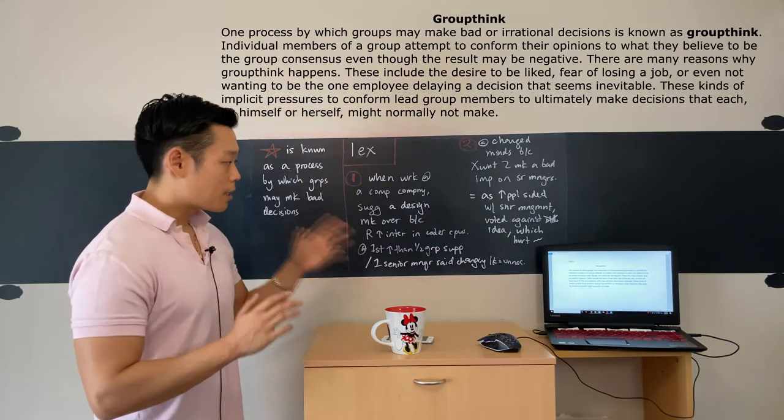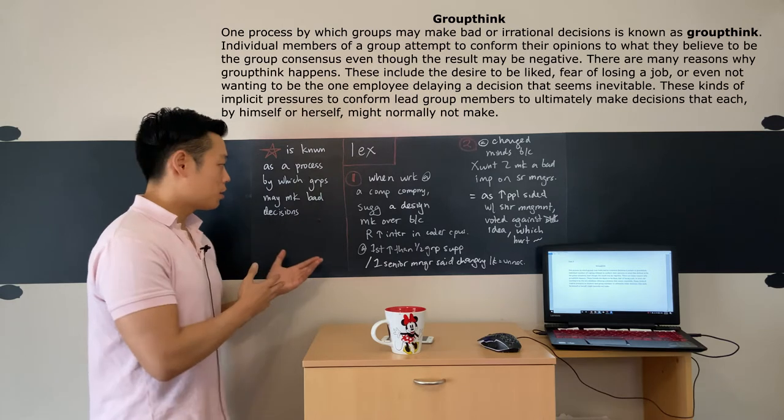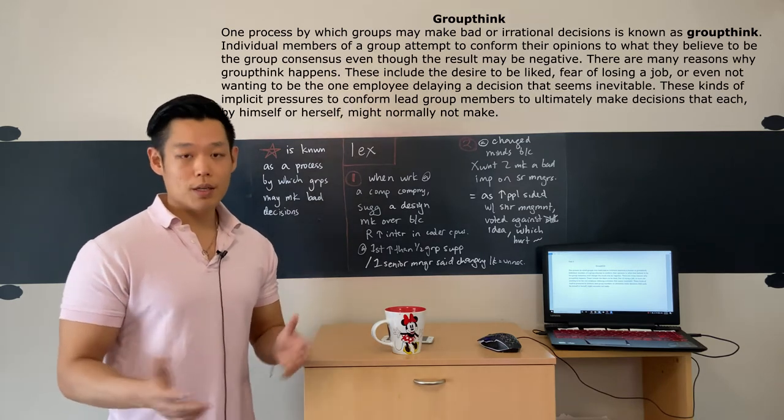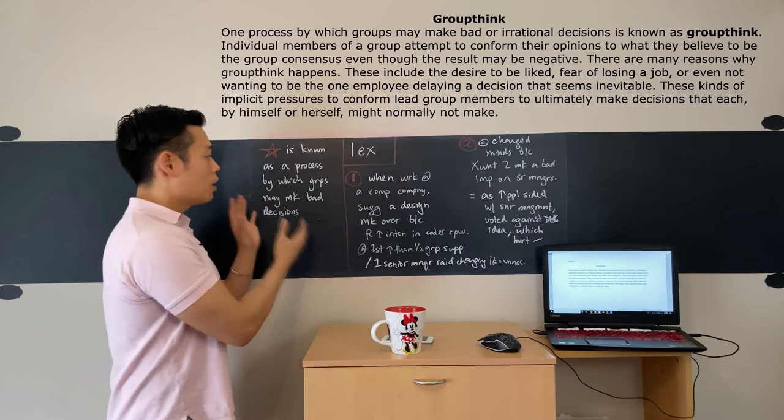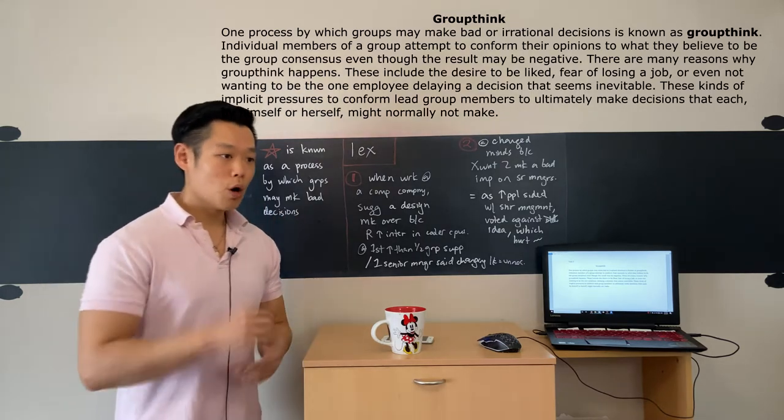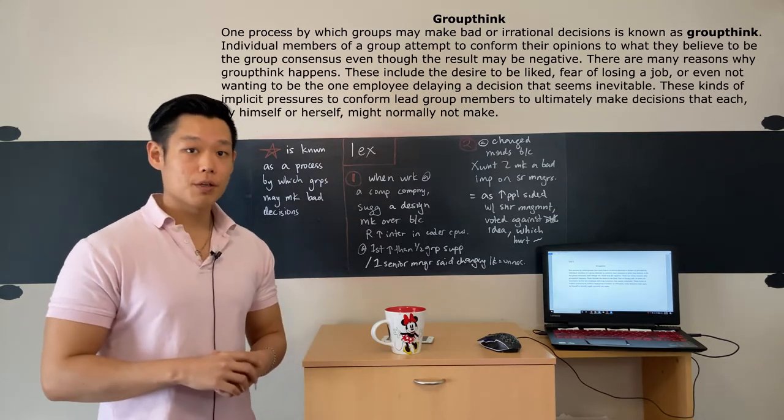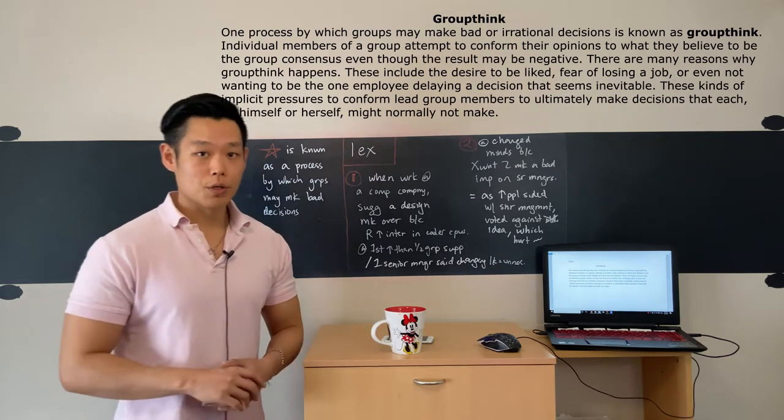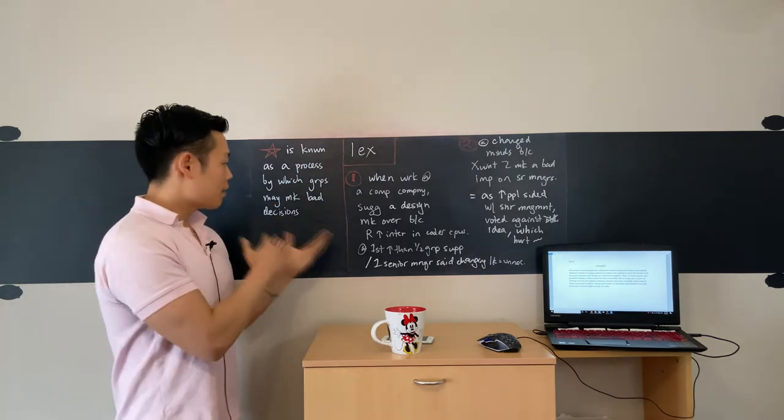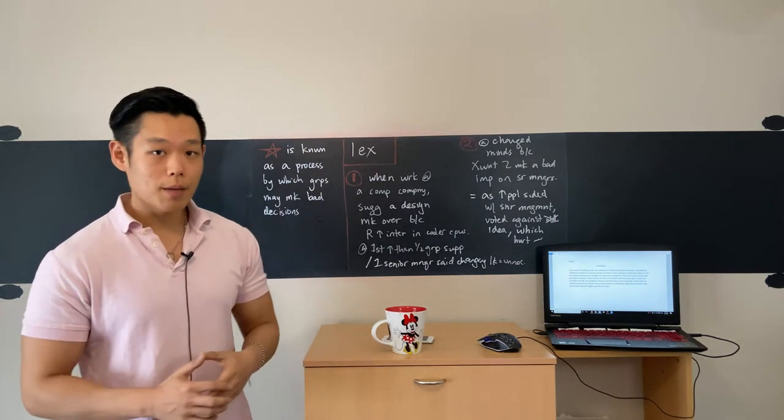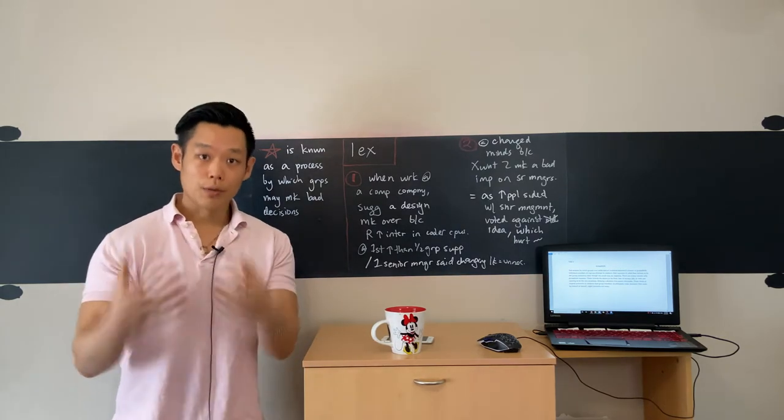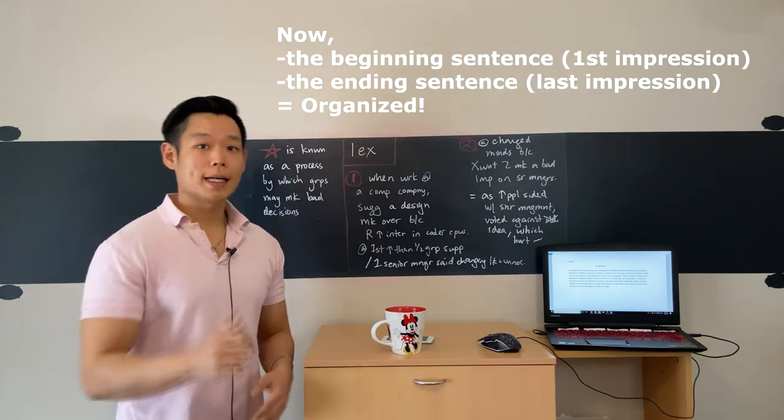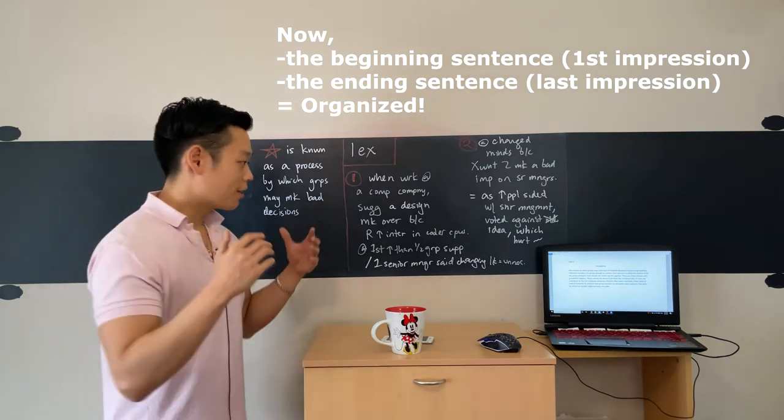So groupthink is known as a process by which groups may make bad or irrational decisions. I took out the words 'or irrational' because the definition is going to be mentioned at the end of our speaking response, and by that time you will probably only have about 15 or maybe even 10 seconds left. So when you're taking notes on the definition, don't make it too long. If you're able to omit some of the synonyms that were mentioned in the definition, please do so because the definition shouldn't be too overwhelming or burdensome for you to say at the end of your speaking response. Now that we have the definition organized, if you are familiar with my speaking template, you should by now be able to say your beginning sentence and your ending sentence very well without a single hiccup. So by now your first and last impressions are going to be flawless. Alright, let's listen to the lecture.